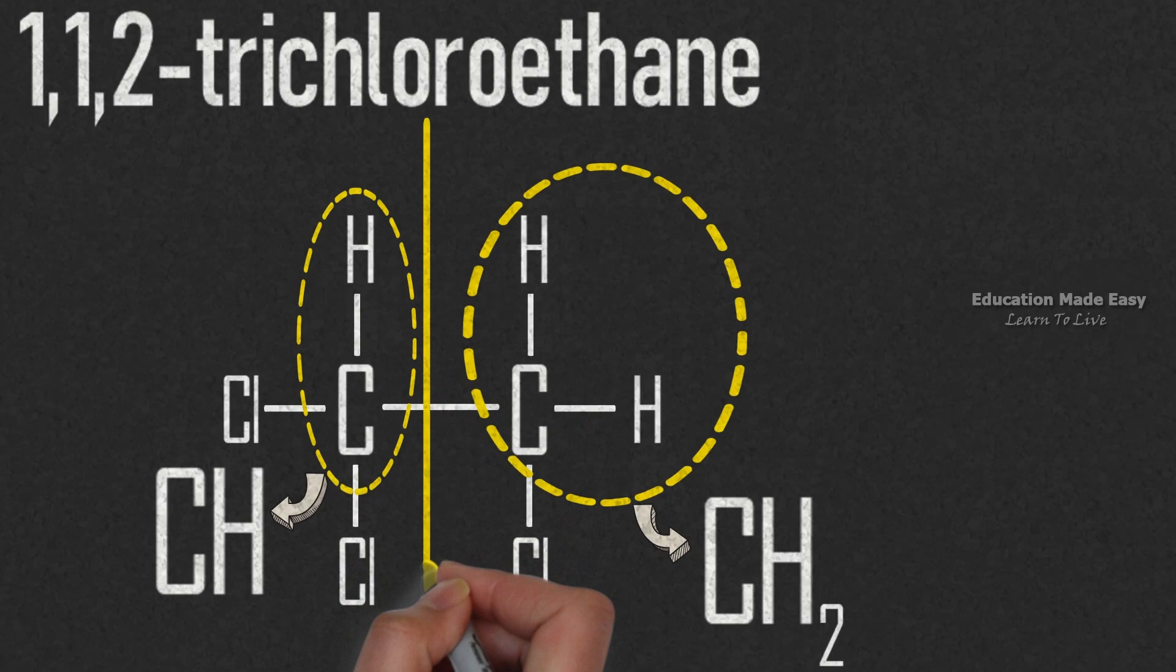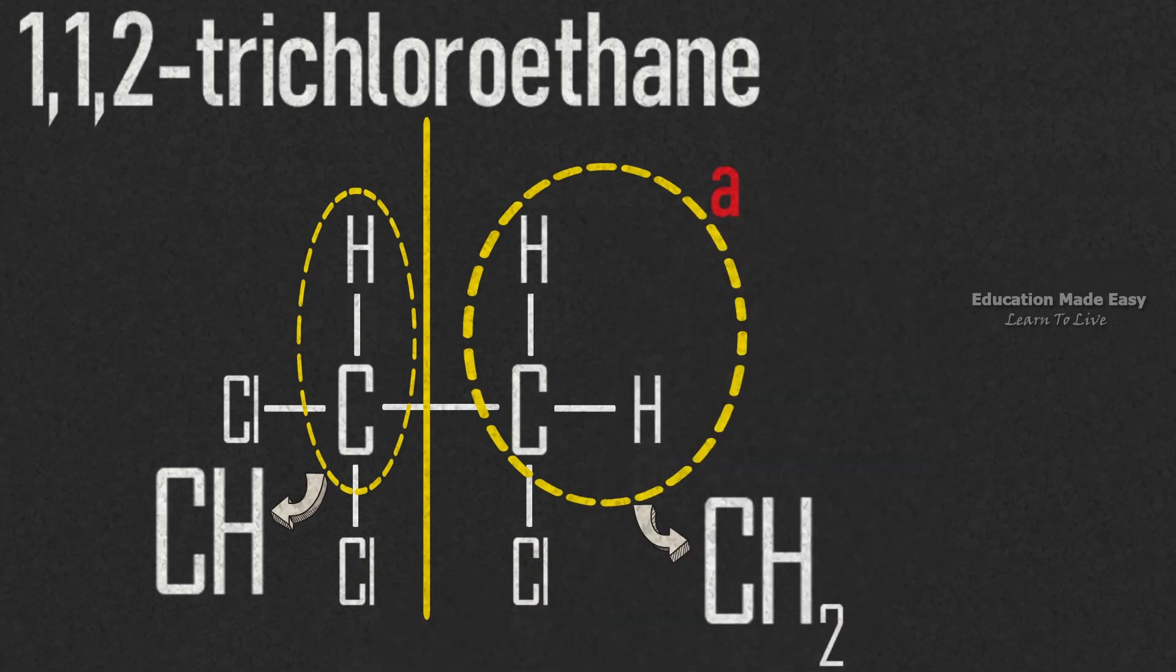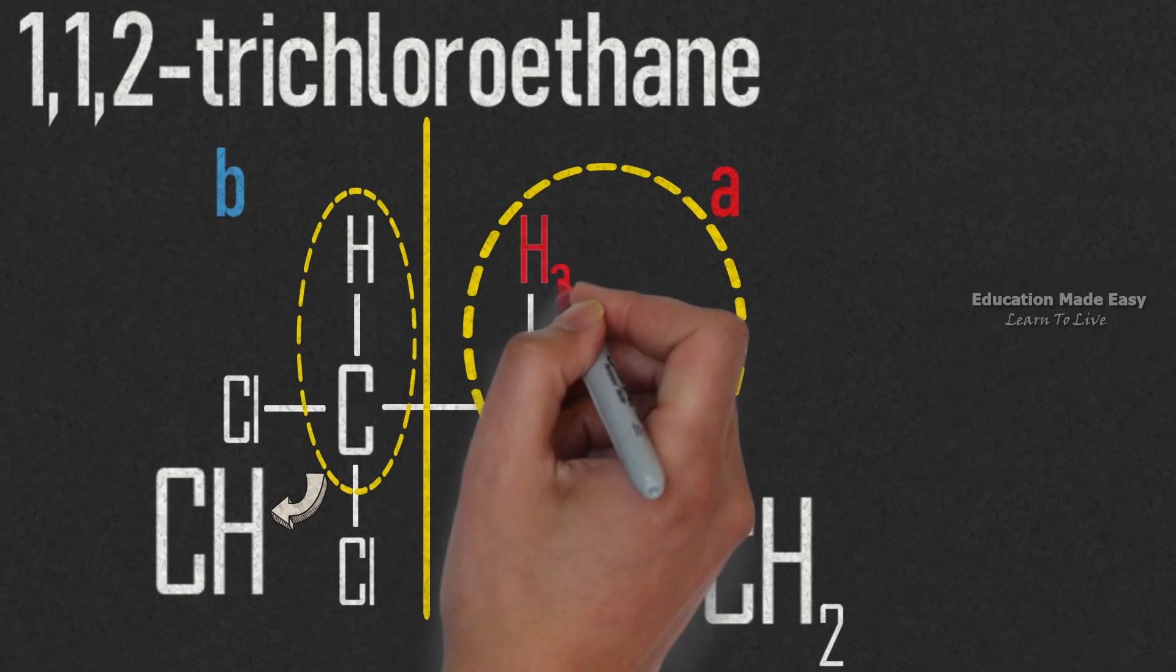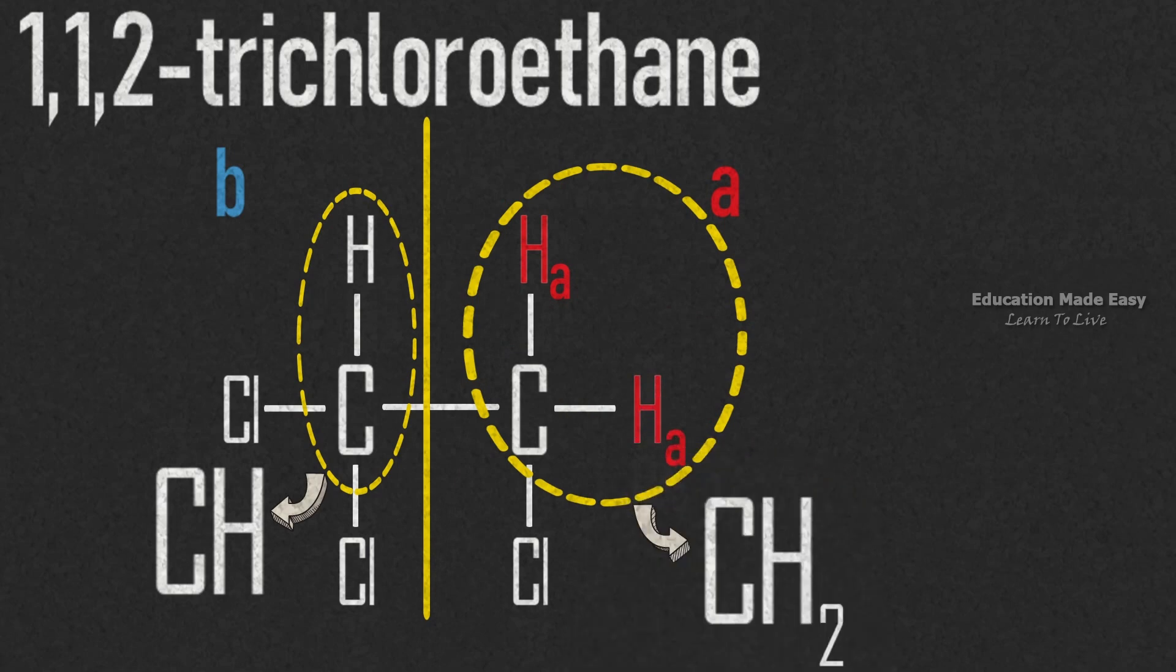Let's divide it into two groups. Let the CH2 group be marked as a and the CH group be marked as b. Also, let's call the hydrogen atoms in group a as Ha. Similarly, let's call the hydrogen atoms in group b as Hb.